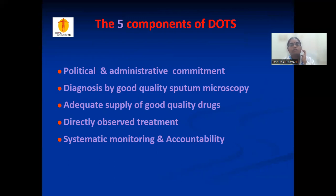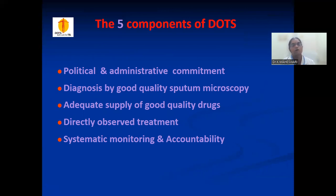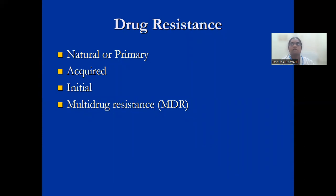The 5 components of DOTS: political and administrative commitment; diagnosis by good quality sputum microscopy; adequate supply of good quality drugs; directly observed treatment in the presence of a health worker; and systematic monitoring and accountability. This ensures the patient is taking the drug, taking good quality drugs, and is being followed up. Drug resistance can be natural, acquired, initial, or multi-drug resistant tuberculosis.